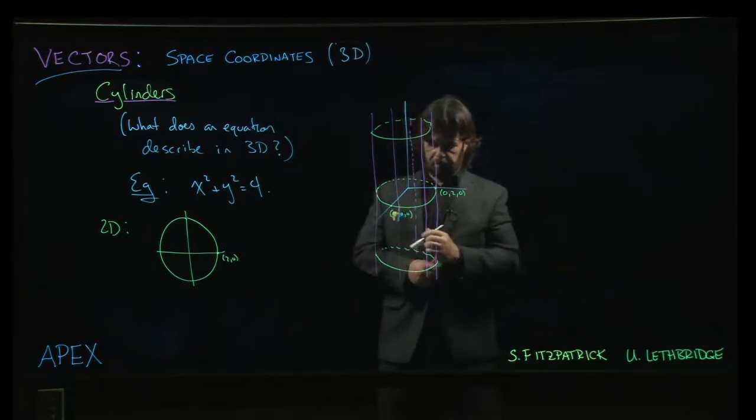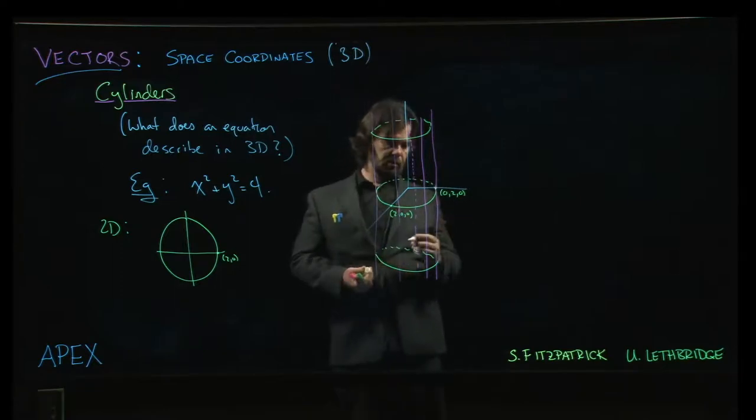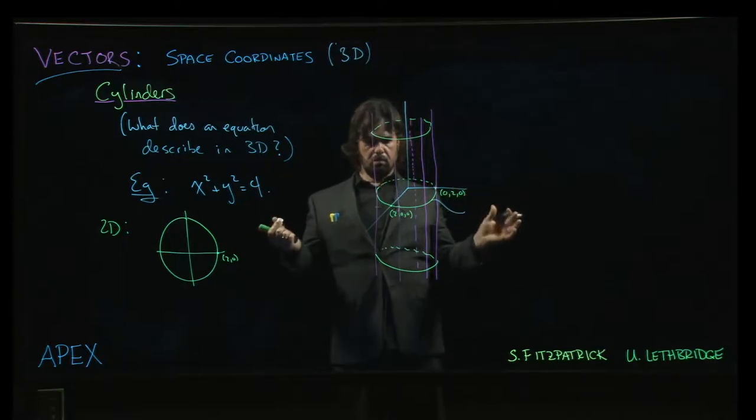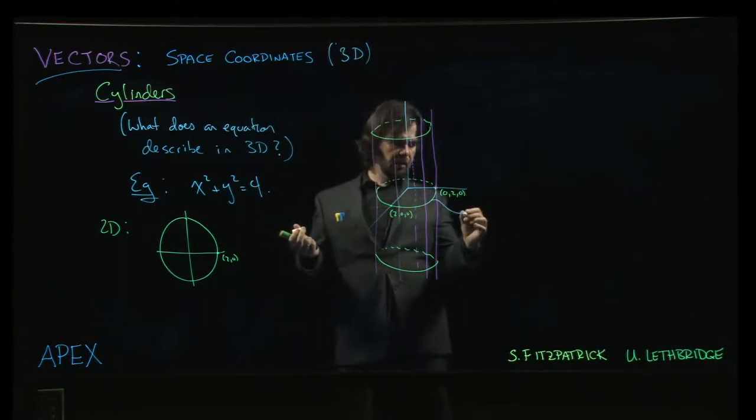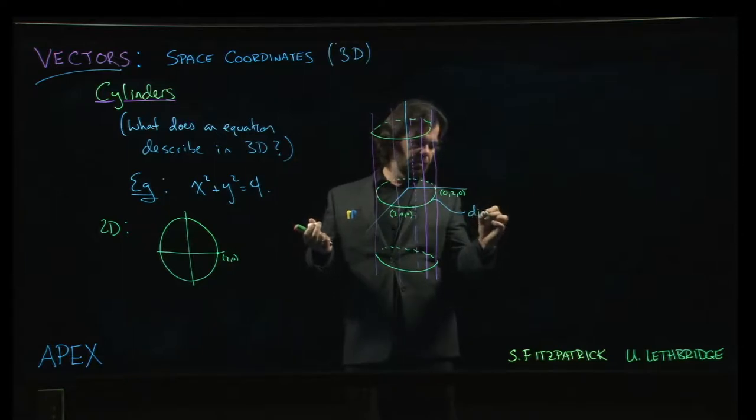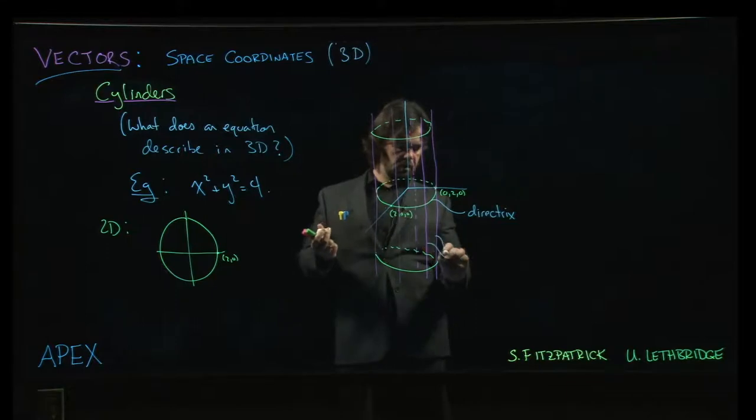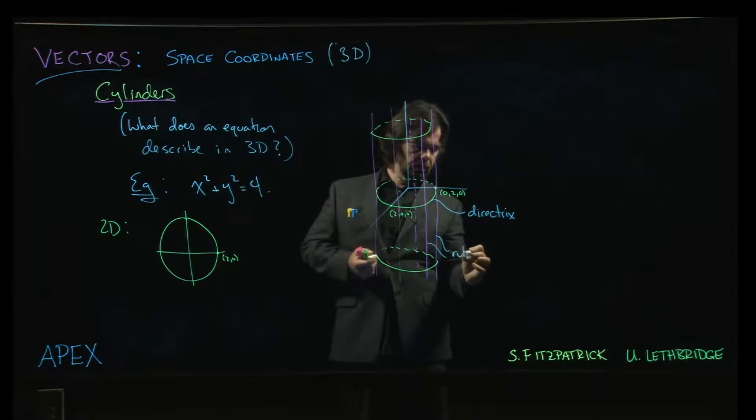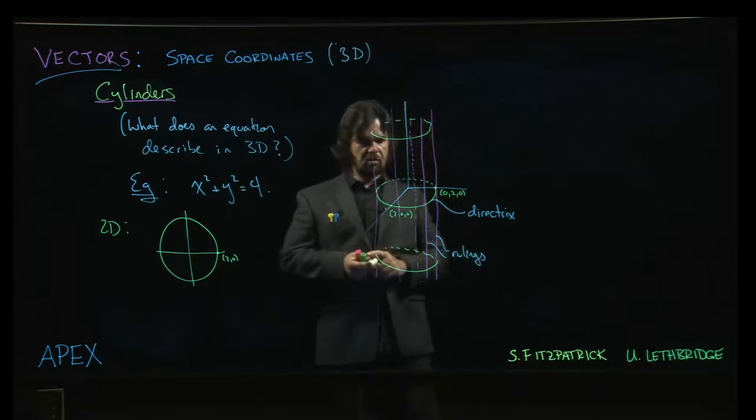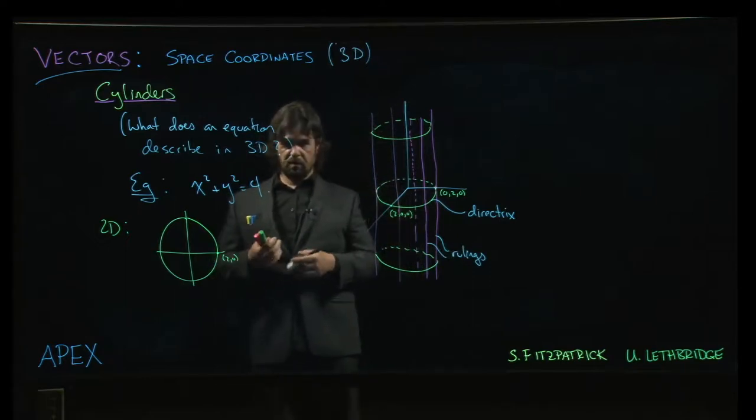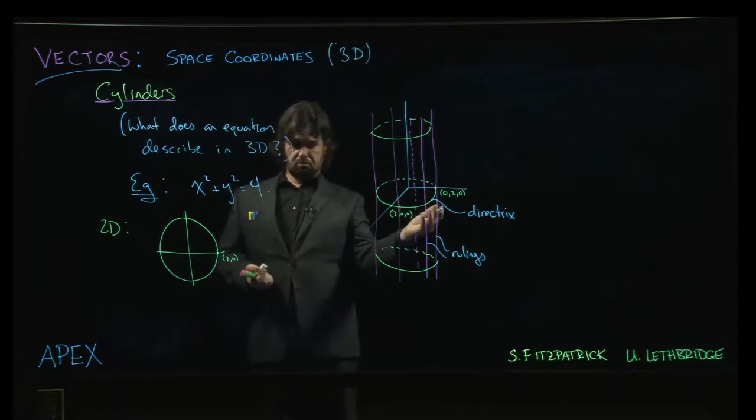Now there's some terminology that you'll sometimes find here. The initial curve that you use to generate the cylinder, this is sometimes called the directrix. These lines that you slide the directrix along, these are called rulings. And you can actually do this with a curve in any plane with rulings that move in any direction that's not parallel to that plane. So you can, and any curve.